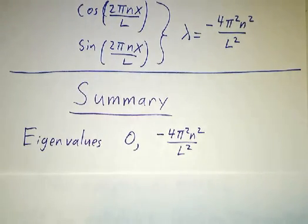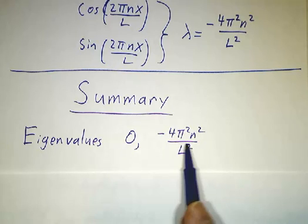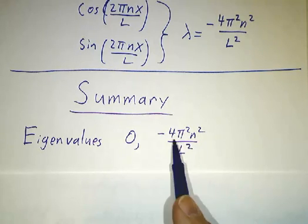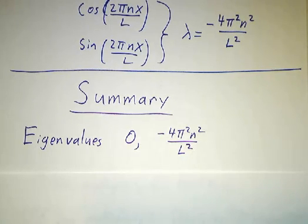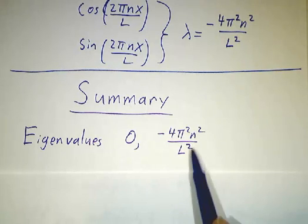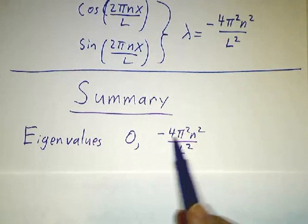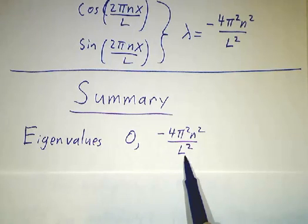So in summary, our eigenvalues are 0, minus 4π²/L², minus 16π²/L², minus 36π²/L², minus 64π²/L². In general, minus 4n²π²/L².